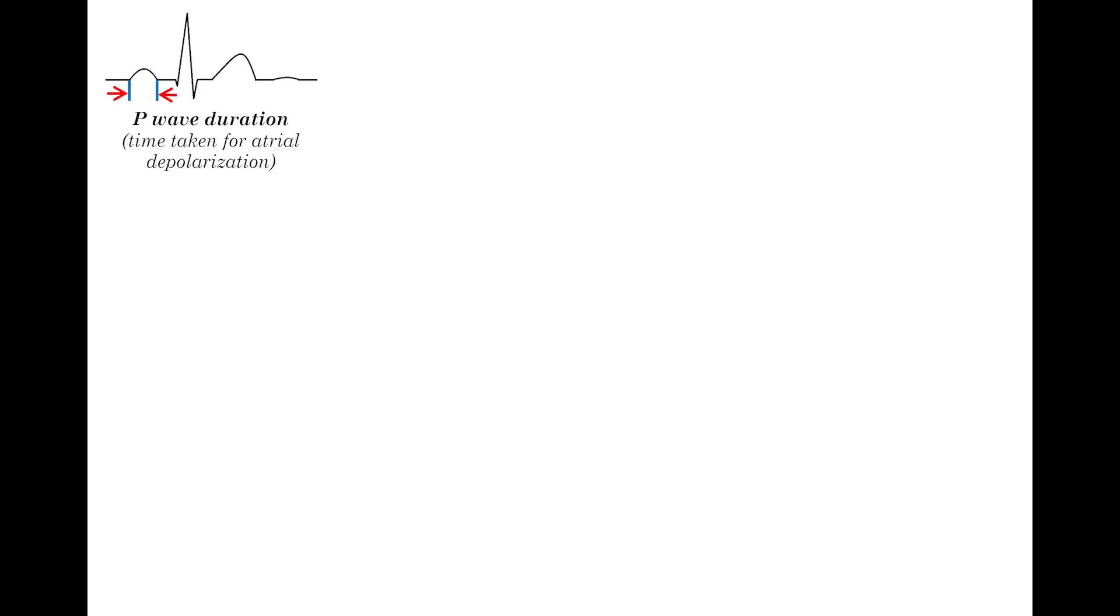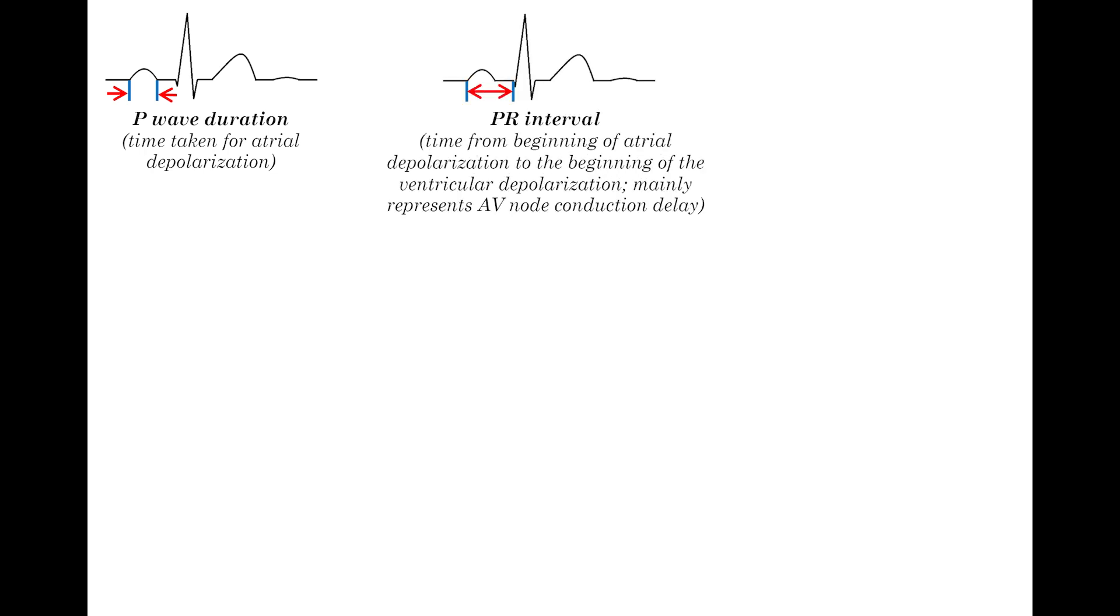P wave duration reflects the time of atrial depolarization. PR interval is the time from the onset of atrial depolarization to the onset of ventricular depolarization. It mainly represents the conduction delay of the AV node. PR segment reflects conduction delay from the onset of atrial depolarization to the onset of ventricular depolarization.